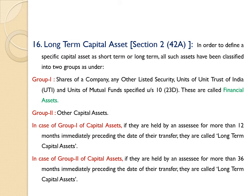In short, we may divide these things simply. Short term capital assets: financial assets held not more than 12 months immediately preceding the date of transfer; other assets held not more than 36 months. Long term capital assets: Group 1 financial assets held more than 12 months are long term capital assets; other capital assets (Group 2) held more than 36 months immediately preceding the date of transfer are called long term capital assets.